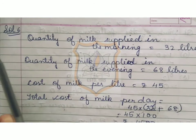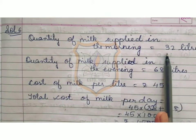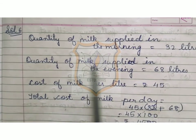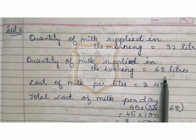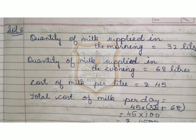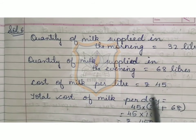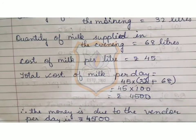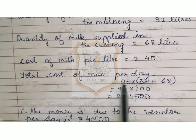Solution for sum number 6. Quantity of milk supplied in the morning is 32 litres. Quantity of milk supplied in the evening is 68 litres, as mentioned — he supplies 32 litres in the morning and 68 litres in the evening. Cost of milk per litre is Rs. 45.